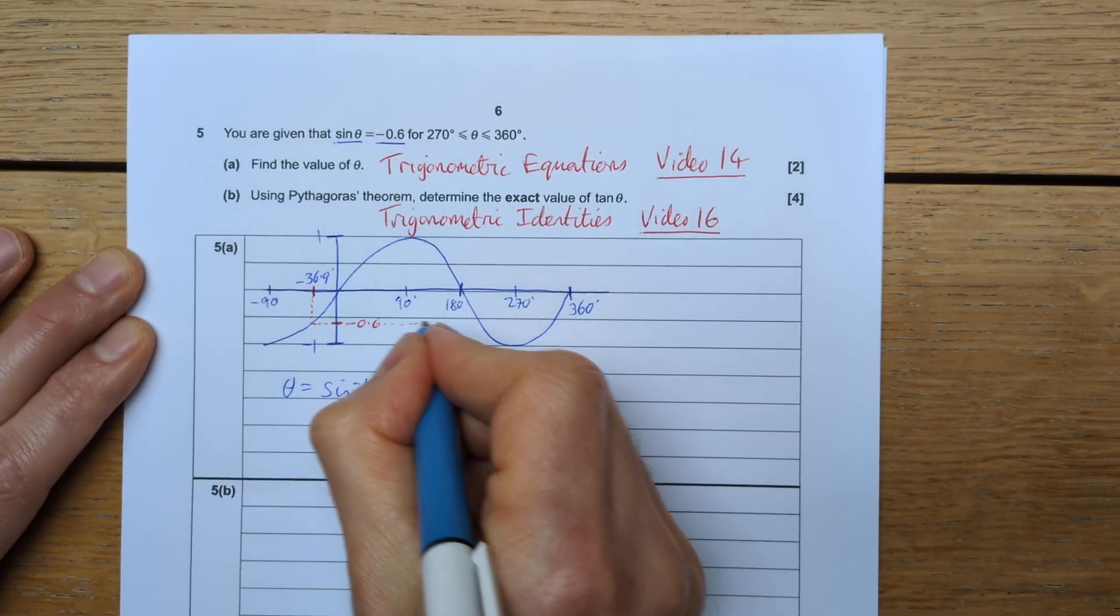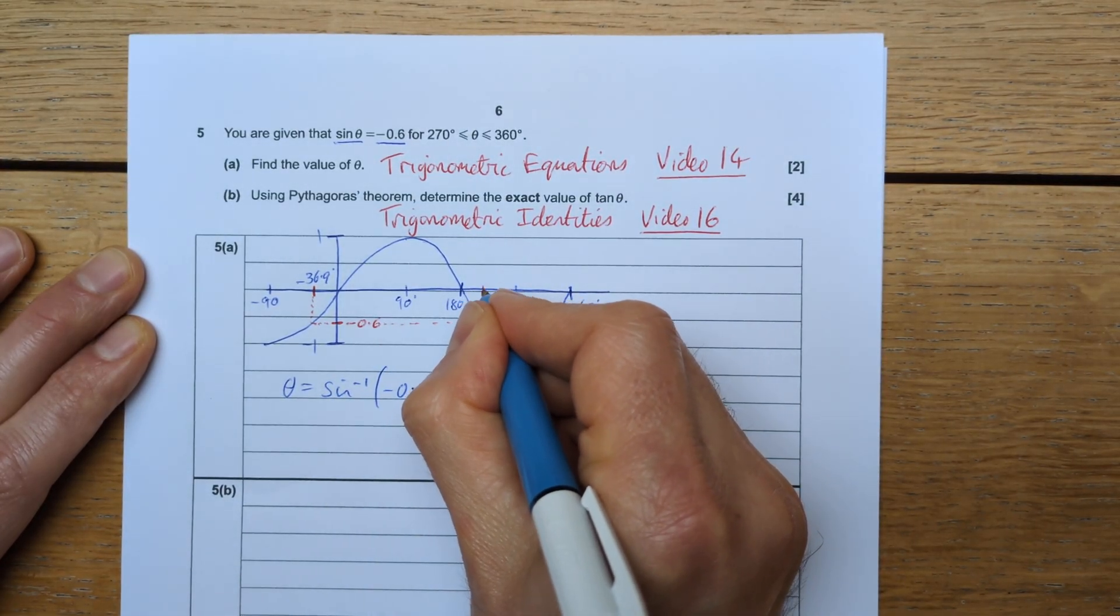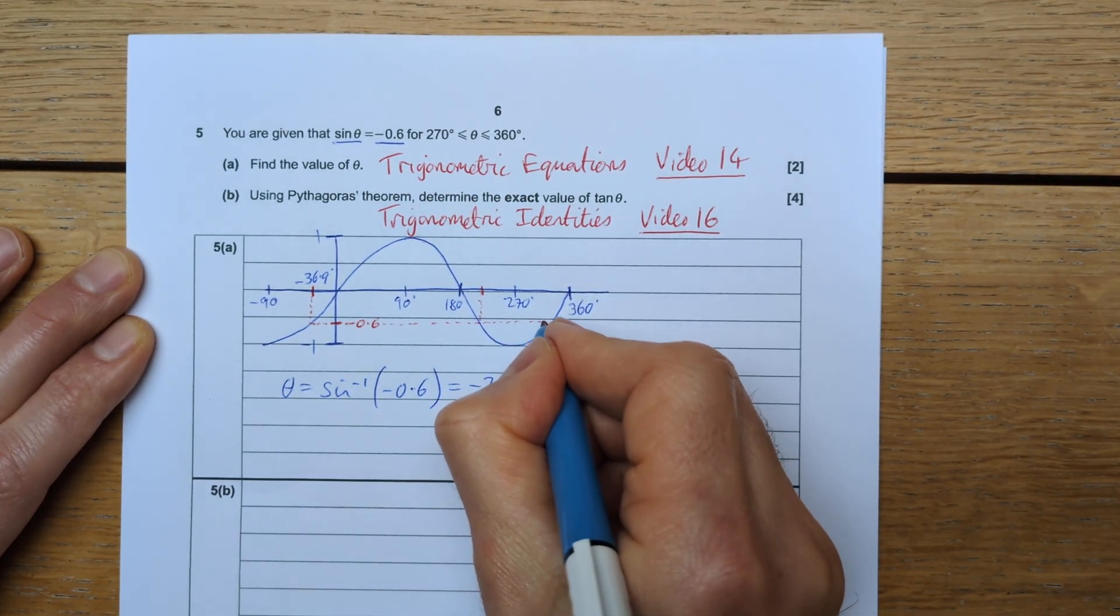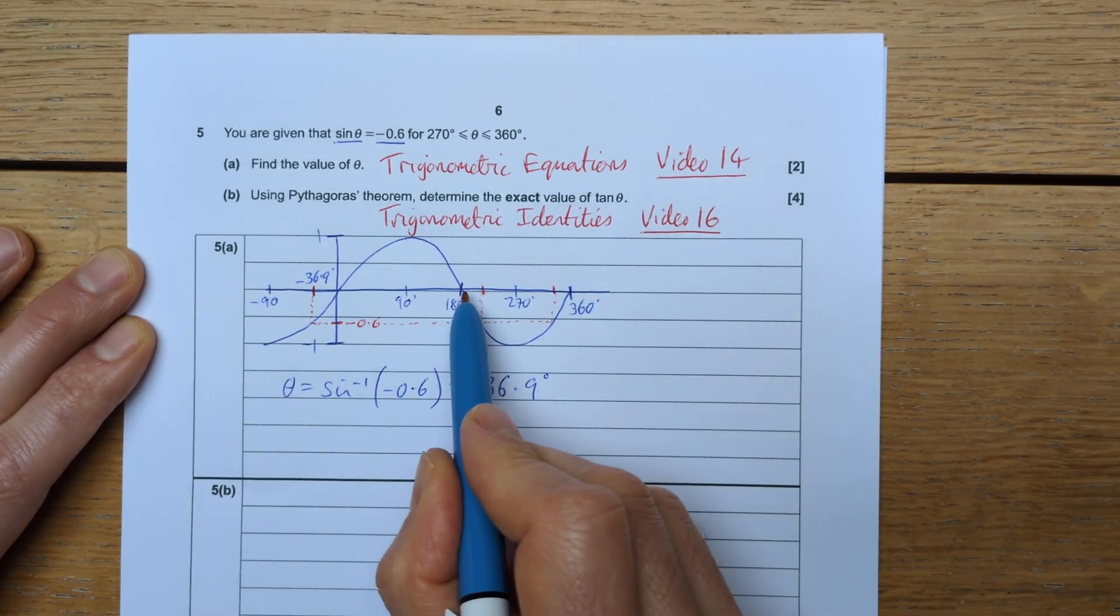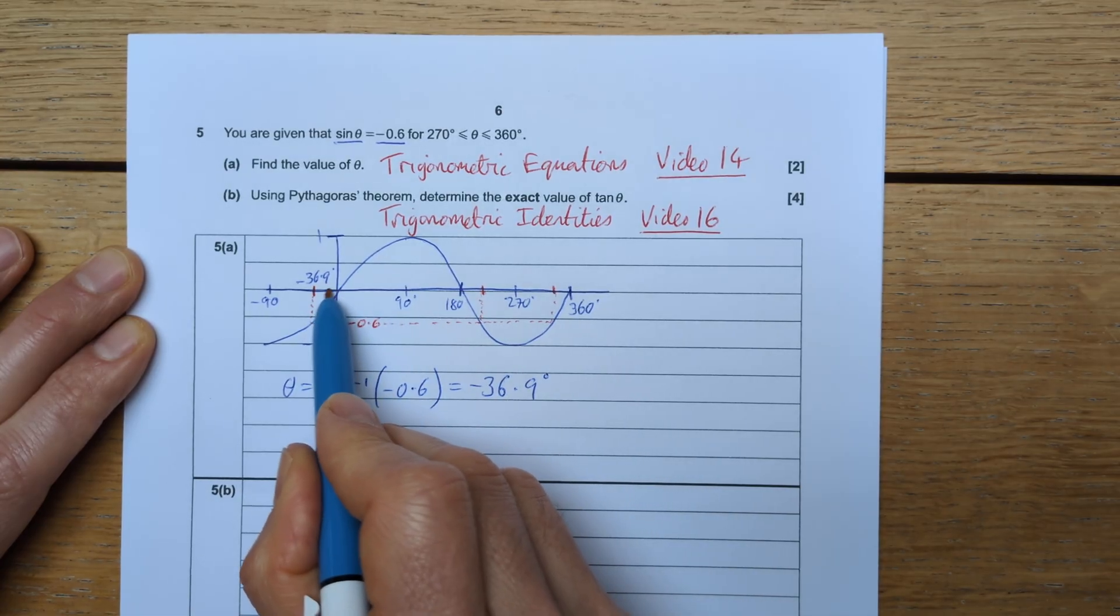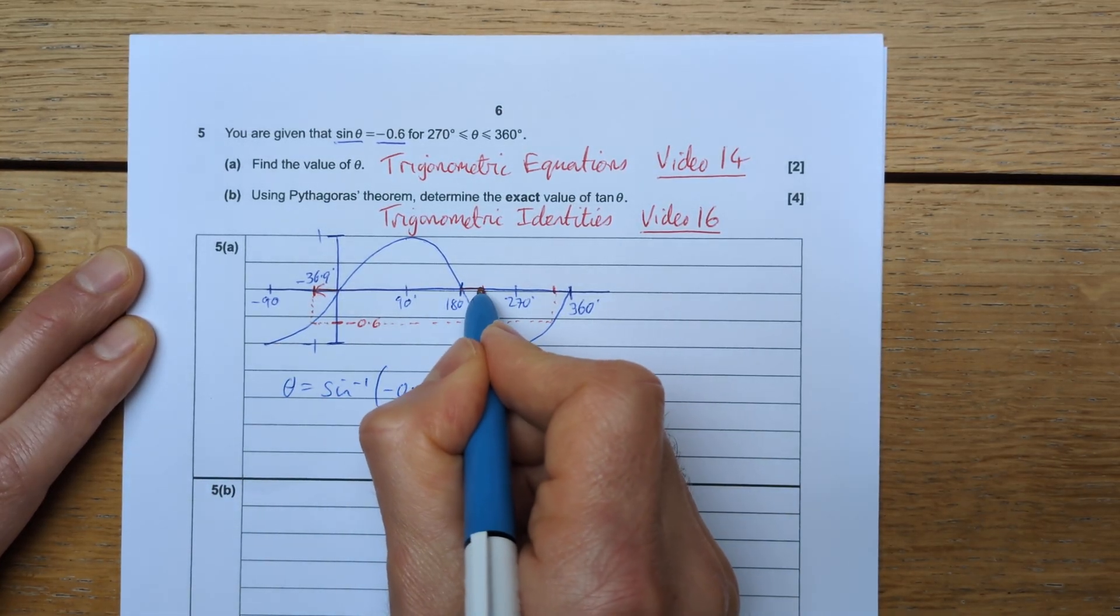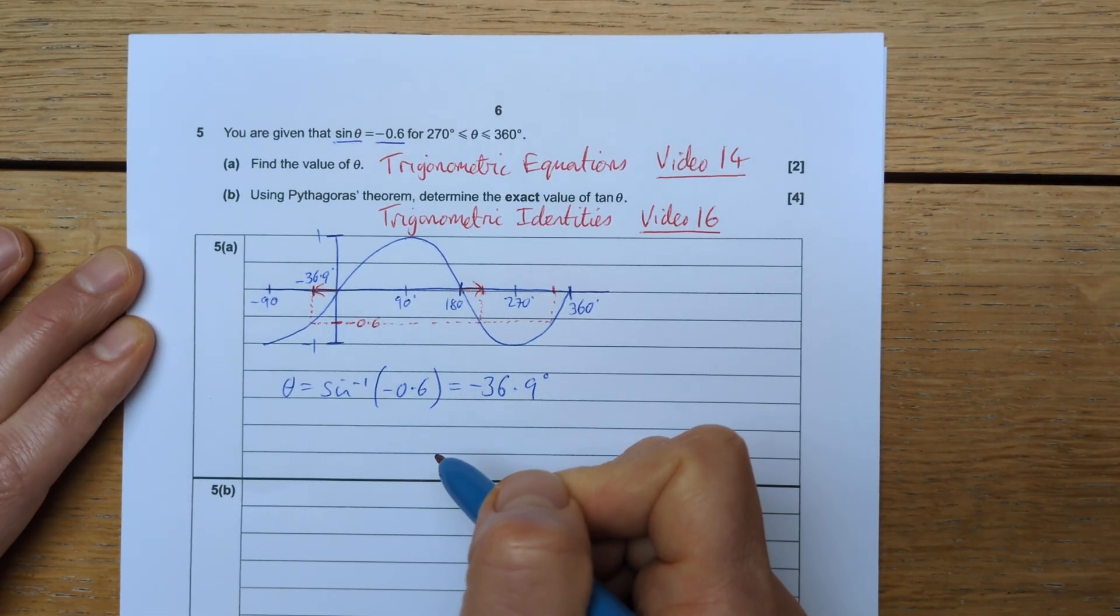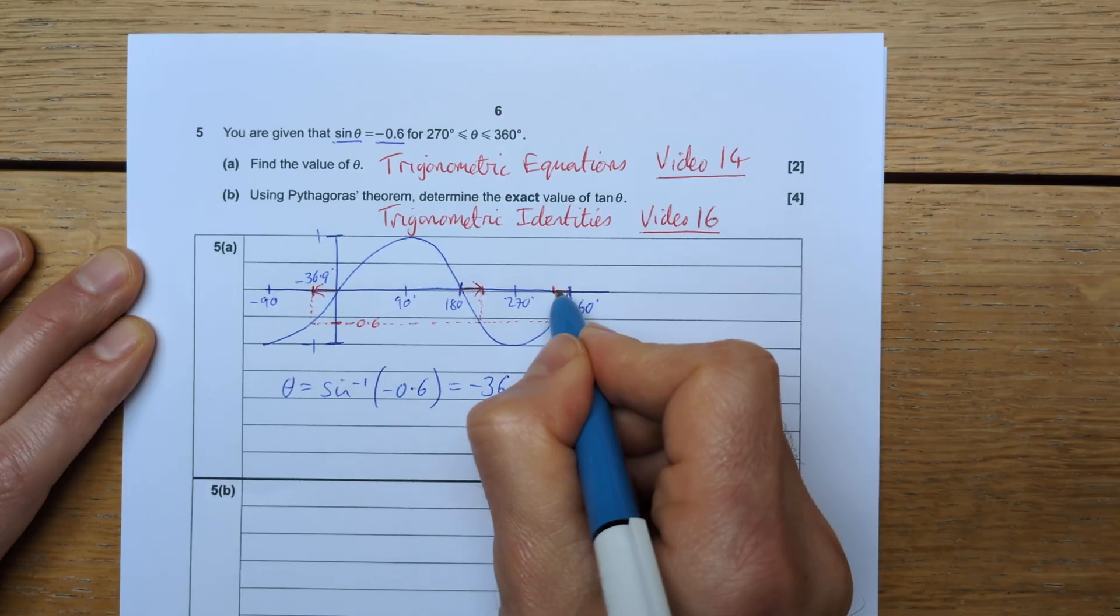We want the angle, not this one, although this is a solution, but it's not in the region we want. We want this angle here. If we wanted this angle here, we would simply do 180 degrees add 36.9, because this distance, 36.9, is the same distance from 180 up. So that would add 36.9 to 180.